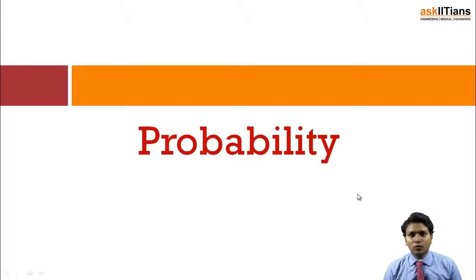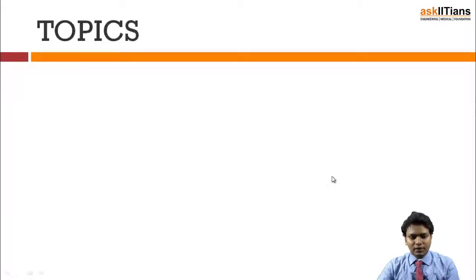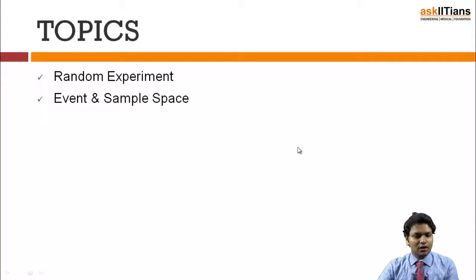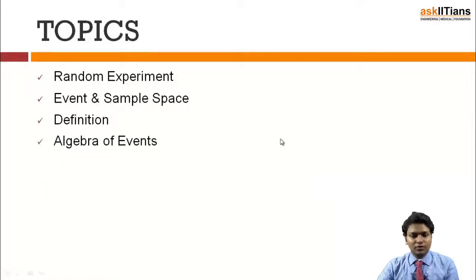So hence this is a chapter of probability in which, for the very start, we will learn some basic concepts, and after we have learned them, we will apply them into the most basic theorems and applications of those. So let's start with the chapter. First of all, I'll tell you what are the basic nuances of this chapter and how we are going to deal with this. Let's start with the topics. In the topics we'll first of all do the random experiment and then events and sample space.